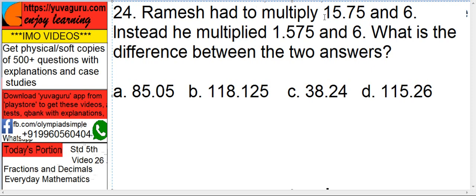Ramesh had to multiply 15.75 and 6. Instead, he multiplied 1.575 and 6. What is the difference between the two answers?